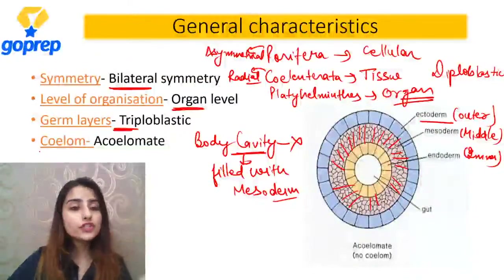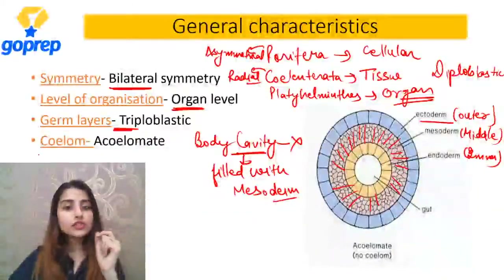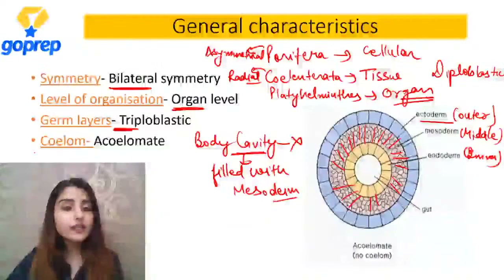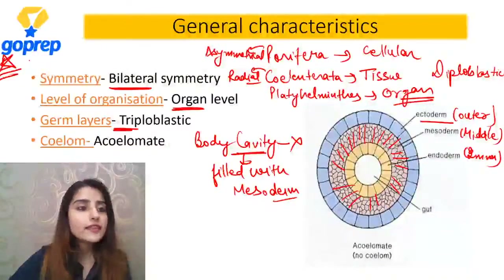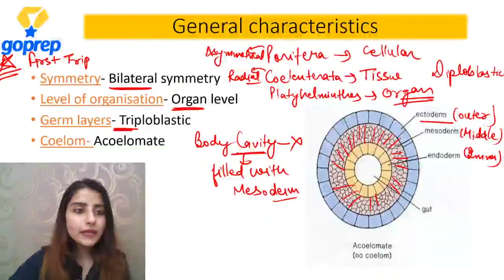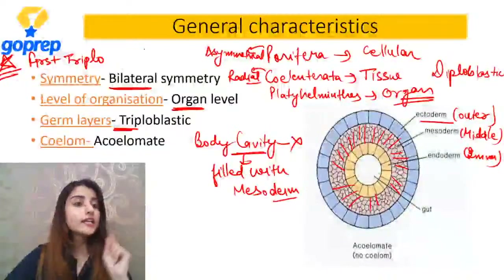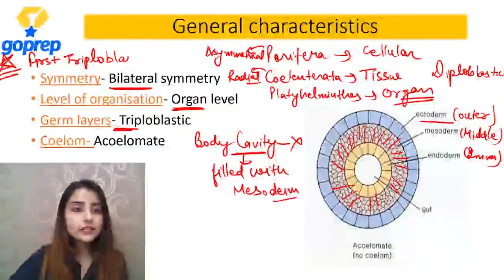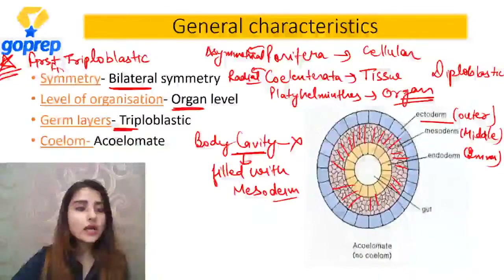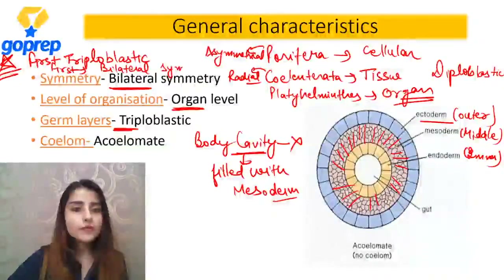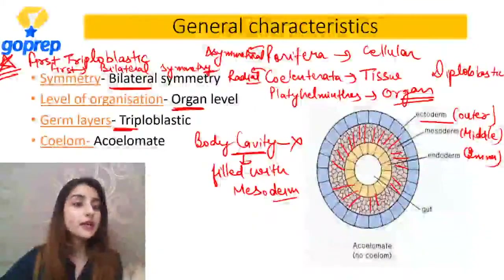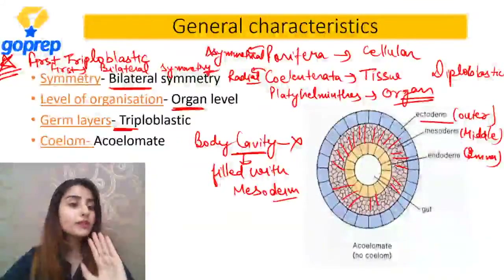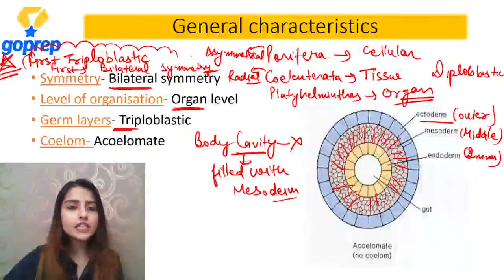Name the first phylum with bilateral symmetry. Name the first phylum which is triploblastic. First acoelomate phylum. Answers: Platyhelminthes. It is the first triploblastic phylum - kyunki isse aage wale saare triplo hain, lekin pichle wale diploblastic thay. And it is the first phylum to have bilateral symmetry - first time bilateral symmetry was seen in Platyhelminthes. And it is the only phylum which does not have a coelom - it is acoelomate. This is highly important from a NEET point of view.